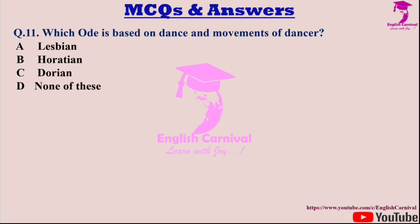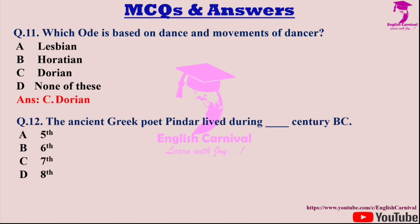Question eleven: Which ode is based on dance and movements of a dancer? Options are A: Lesbian; B: Horatian; C: Dorian; and D: None of these. Correct answer is C — the Dorian ode.